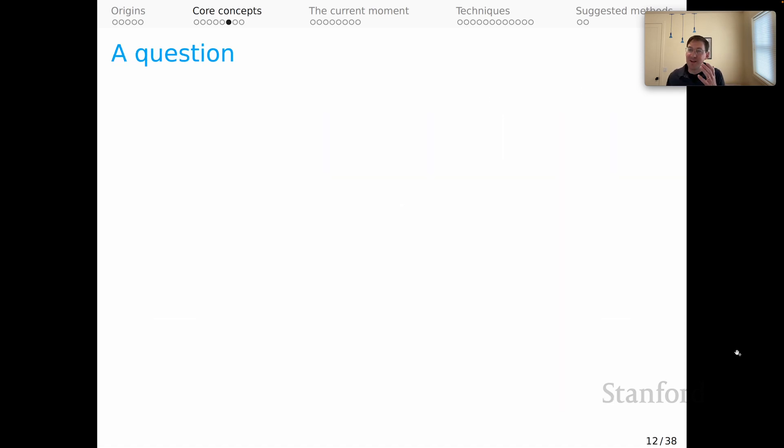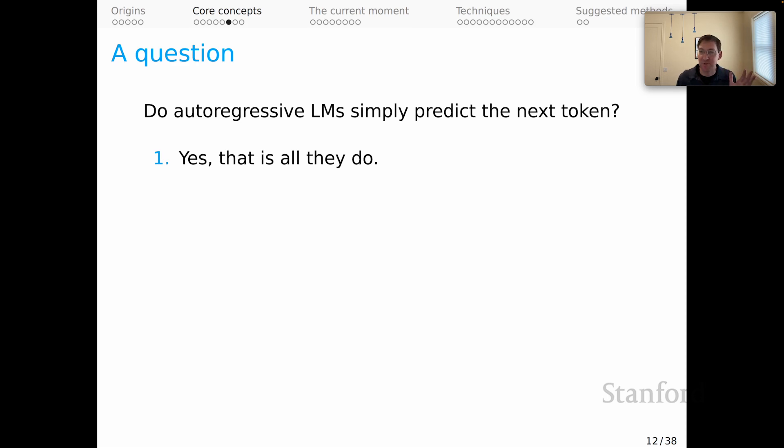So that cues up a kind of nice question that you could debate with your fellow researchers and friends and loved ones and people out in the world. Do autoregressive language models simply predict the next token? Well, your first answer might be yes, that's all they do, and that is a reasonable answer.